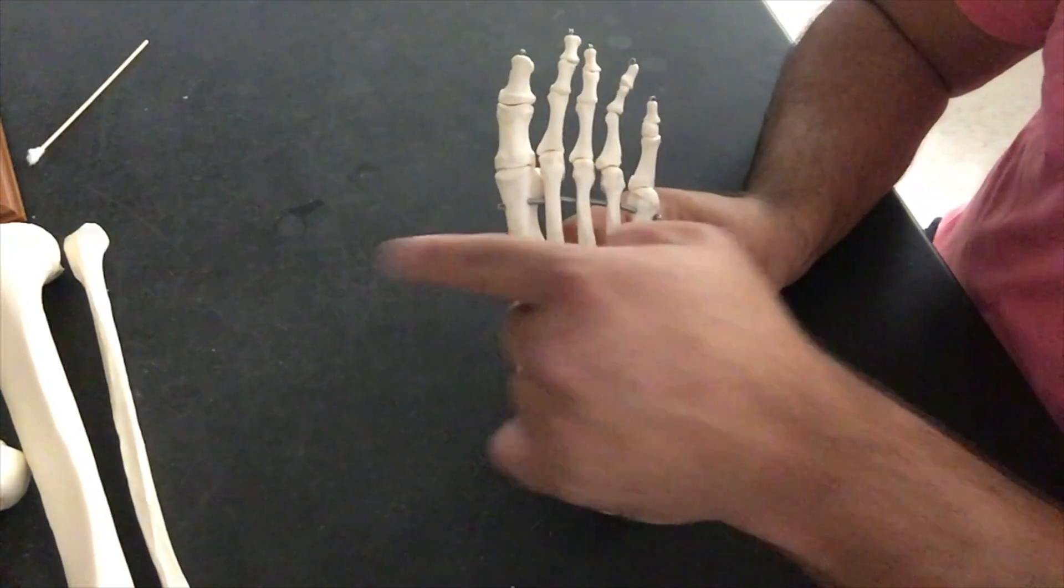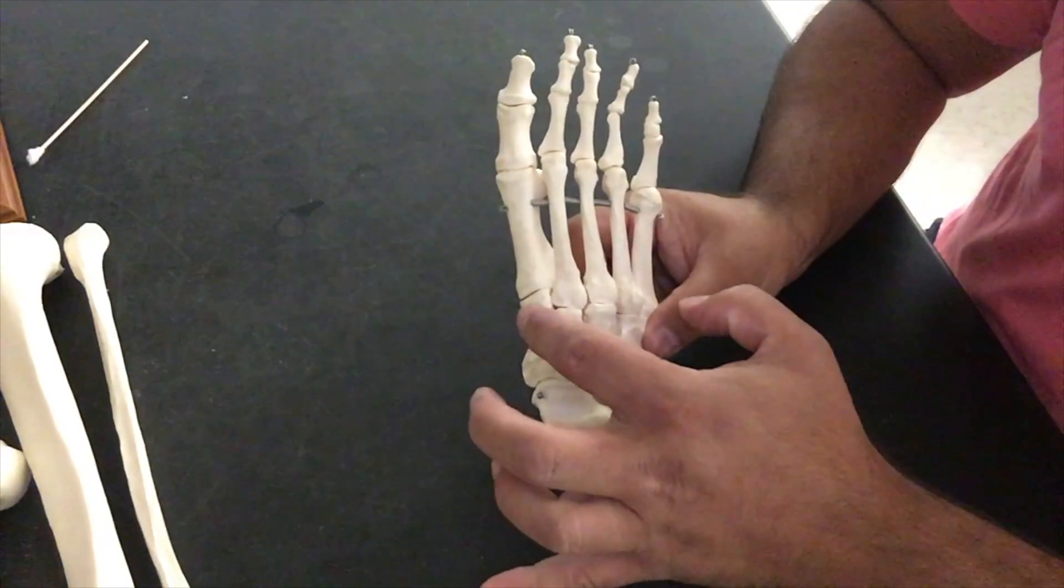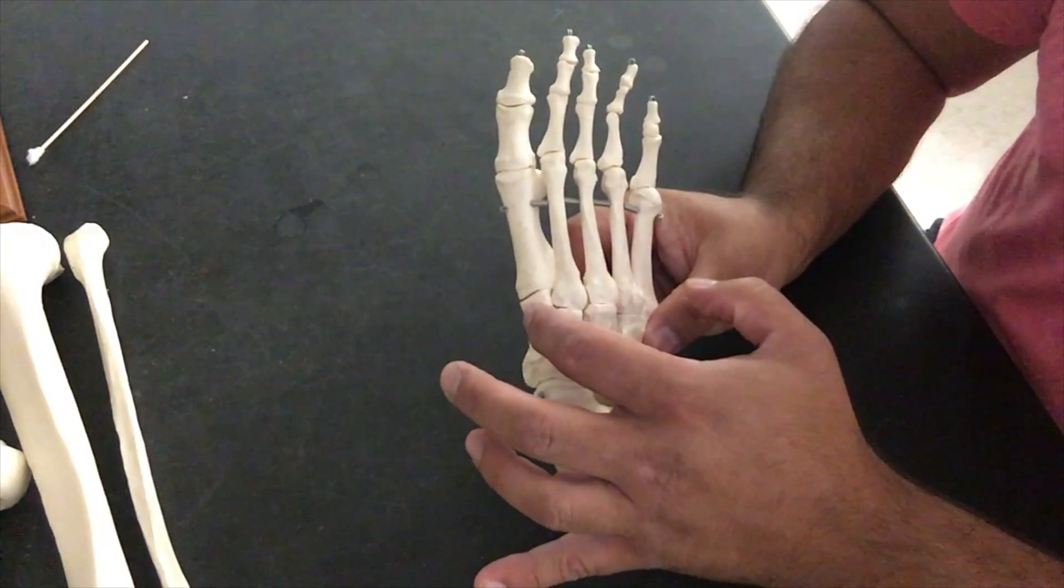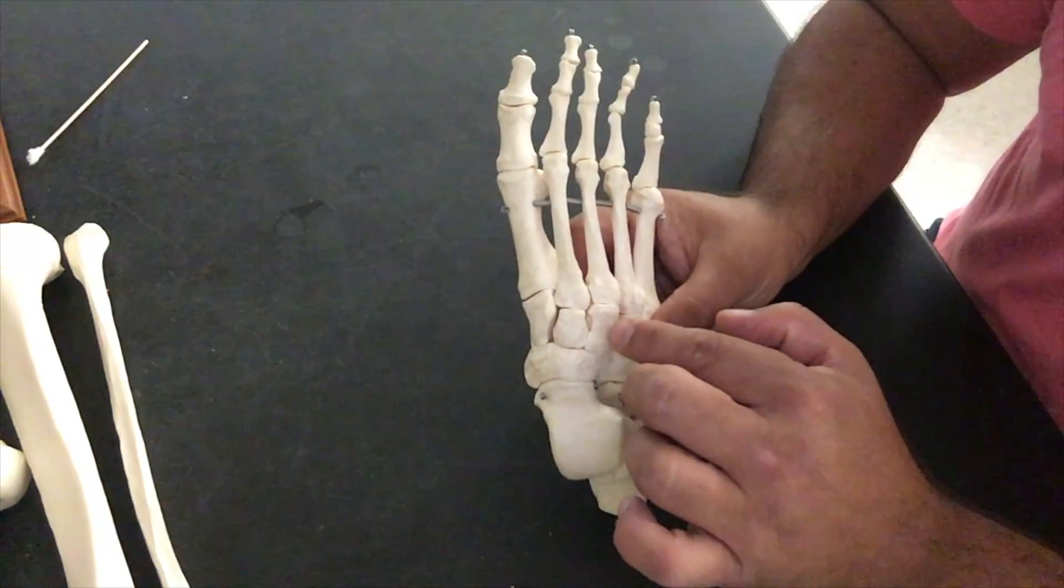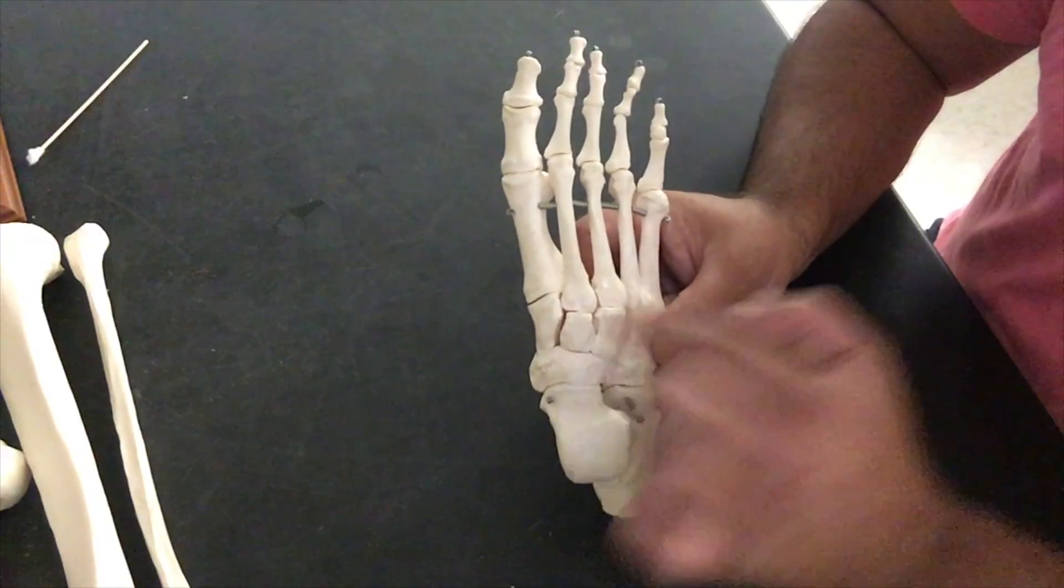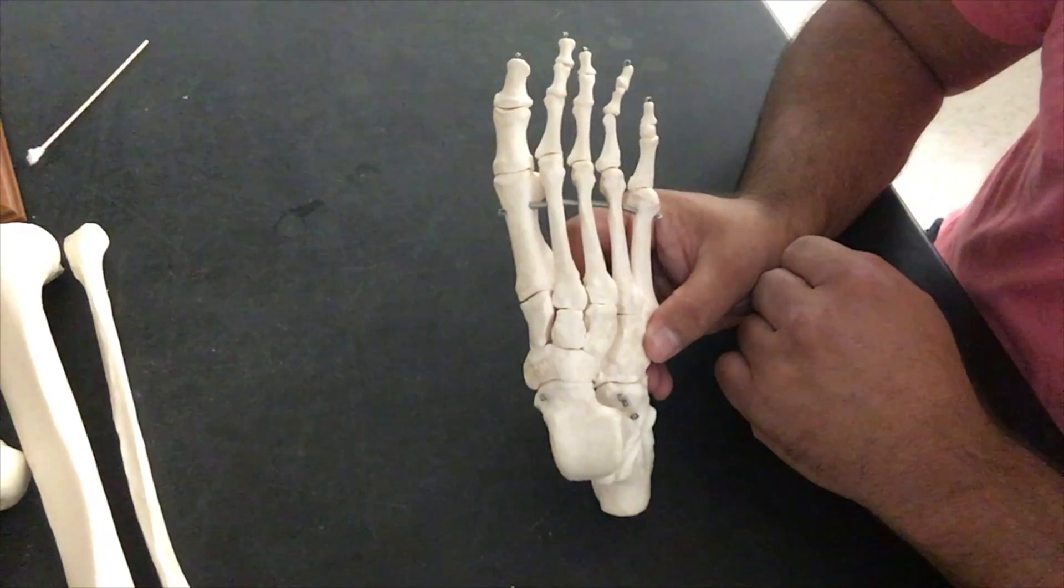This is going to be our medial most aspect, our medial cuneiform. This is going to be our lateral cuneiform. And then we're going to have one in the middle, the intermediate cuneiform.